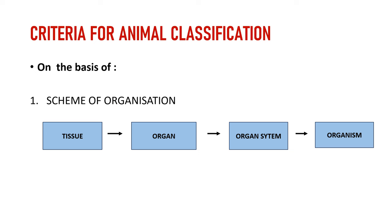Our first basis of discussion is scheme of organization — how the organism is arranged and formed. The first level is tissue level. Tissue level means in our body we have epithelial tissue, muscular tissue, and connective tissue. All the cells aggregate to form a tissue; it is a mass of cells.